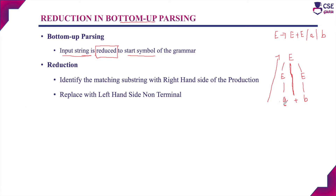In every step, we need to identify a substring and apply a production rule to that substring such that it will reach the start symbol of the grammar. This is nothing but bottom-up parsing.